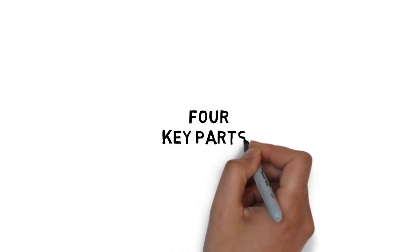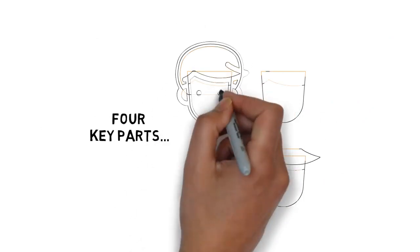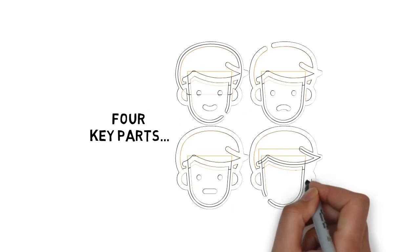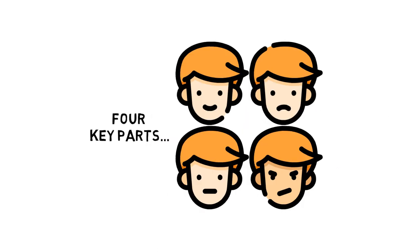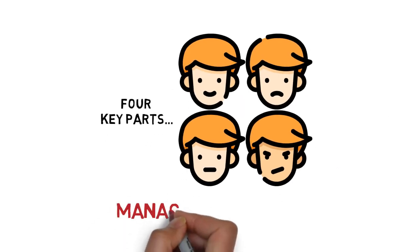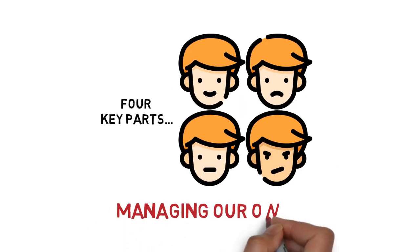More specifically, it can be broken down into four key parts: perceiving emotions, using emotions to our benefit, understanding other people's emotions, and managing our own.